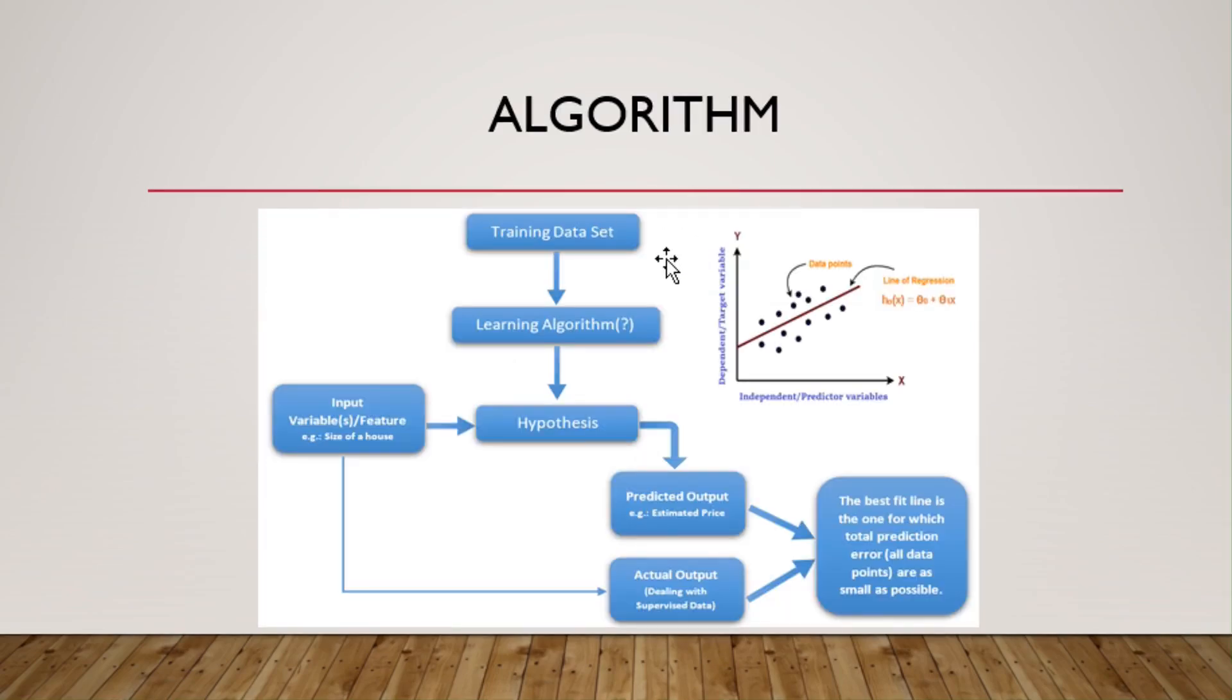Here is its algorithm. We need to provide training dataset to our linear regression algorithm. And on the basis of our input variables, we are going to predict the target variable. And we are going to obtain the best fit line which represents the actual output that is target variable. Confused? Don't worry, let's understand it more clearly.